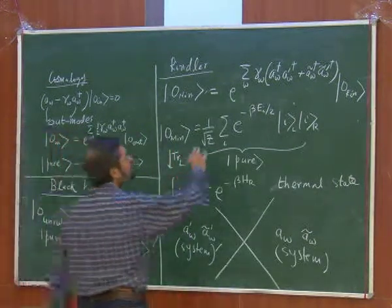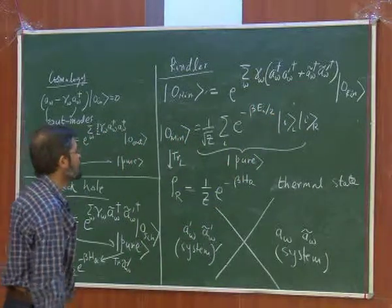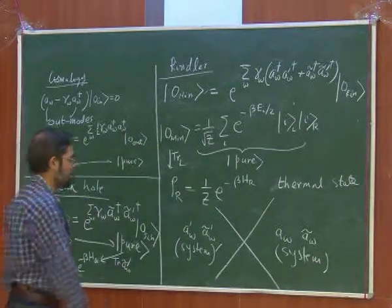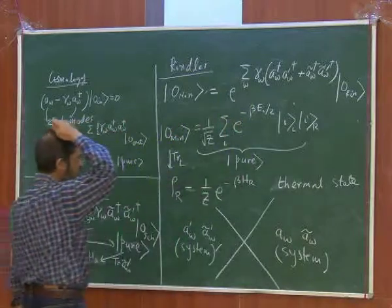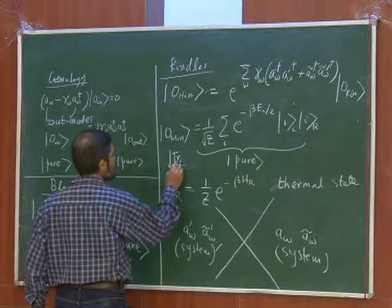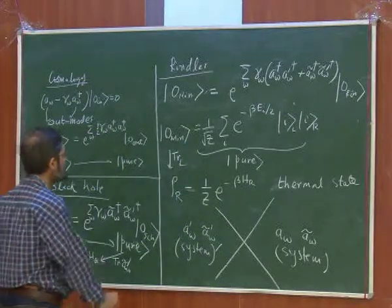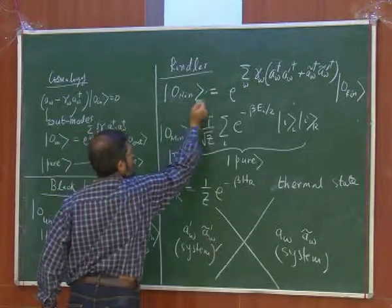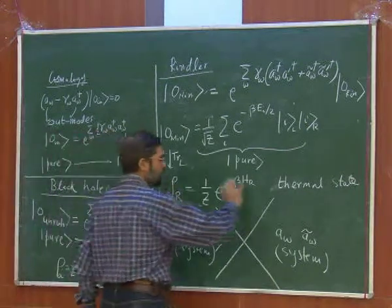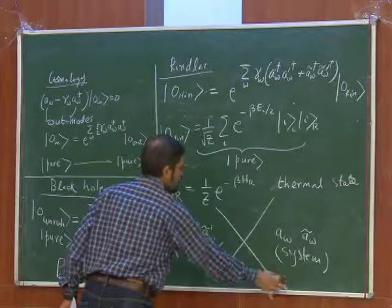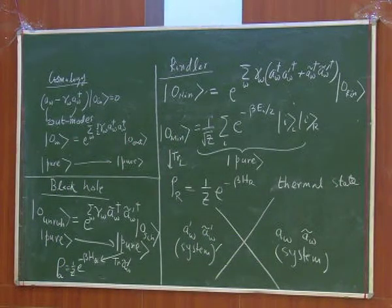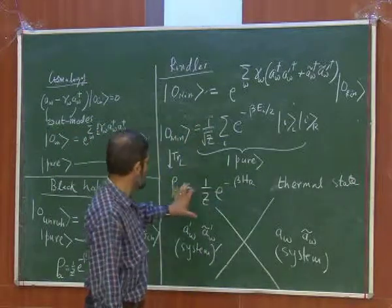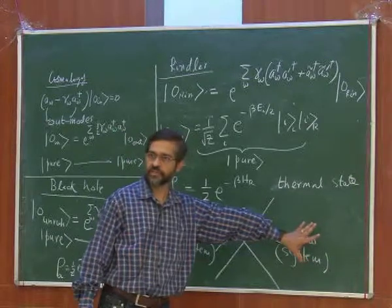This state could be rewritten in terms of the so-called thermofield double, which is of course a pure state — an entangled state between the left and the right, the primed and the unprimed fellows. If you take a trace, making a density matrix out of this pure state density matrix and trace it over the left modes, then you get a thermal state — that is a mixed state — out of the right-sided oscillators. This is called the purification.